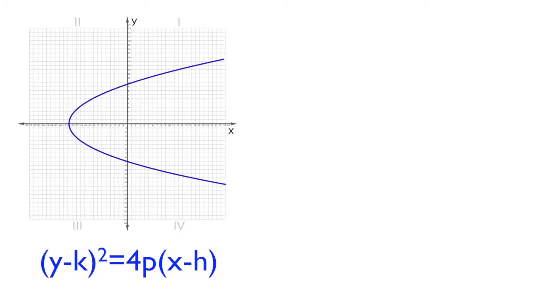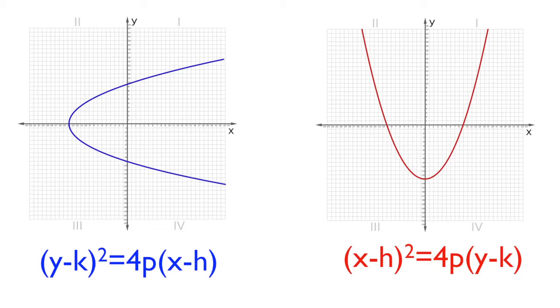On the other hand, if the parabola has a vertical axis, the standard equation will be x minus h squared equals 4p times y minus k.